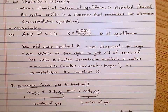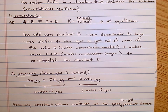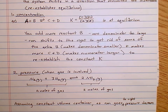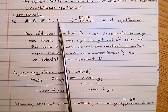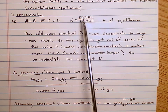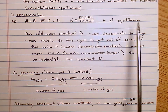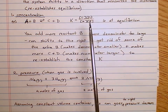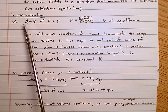Let's look at some examples of how we can stress out a reaction and see how it responds. One thing to look at is concentration. If you had a reaction A + B in equilibrium with C + D, here's our equilibrium constant — products over reactants. Say this reaction is at equilibrium. What would happen if you added some more of B to it?